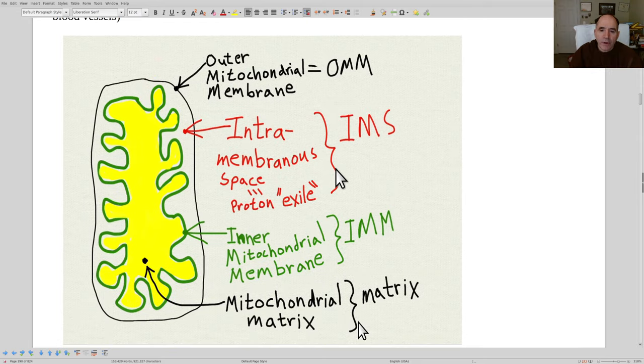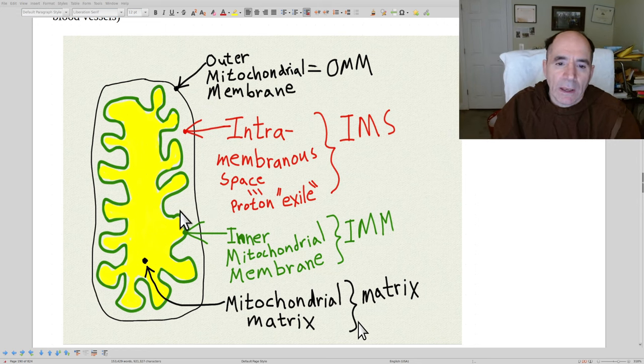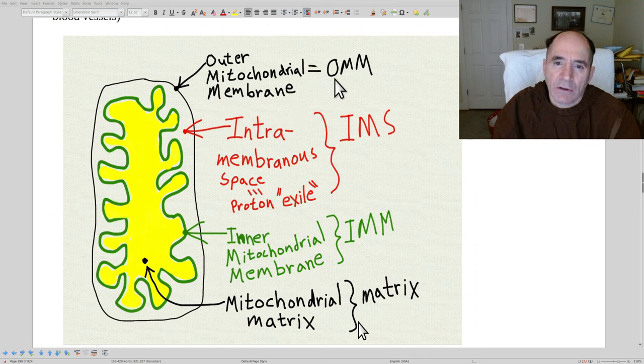All right, I'm going to show you a little bit about mitochondria. So here is a mitochondria, and it has an outer mitochondrial membrane, which really doesn't do much. It's sort of a barrier to other stuff coming in. That's called, it's typically abbreviated OMM. Then you have an inner mitochondrial membrane, which is this green lining of the inner part of the mitochondria.